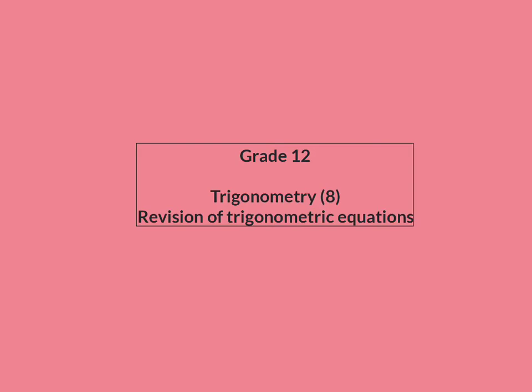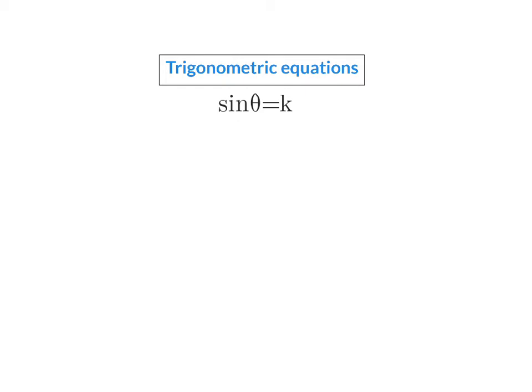In the next two lessons we're going to have a look at trigonometric equations. For today we're going to start off revising everything you've learned in grade 10 and 11. When we give you a trig equation and we ask you to solve theta, we want you to determine the specific values that we can substitute into the angle theta's place that will give us the ratio given. Because a trig function can repeat itself, there will be more than one angle size that gives us the same ratio.